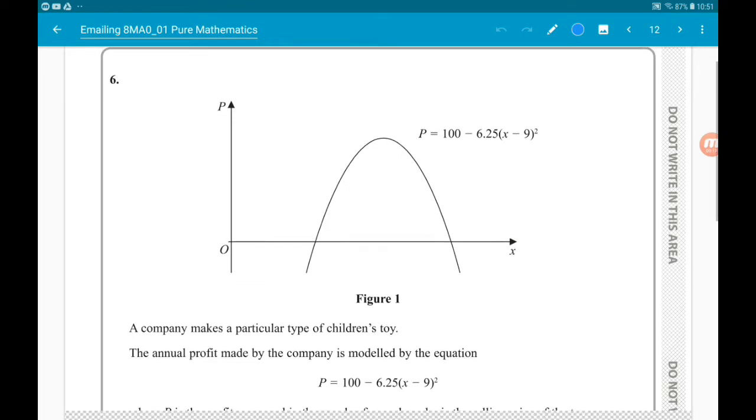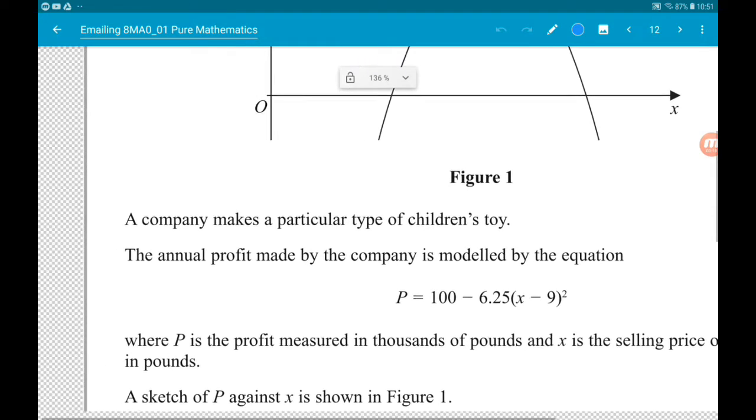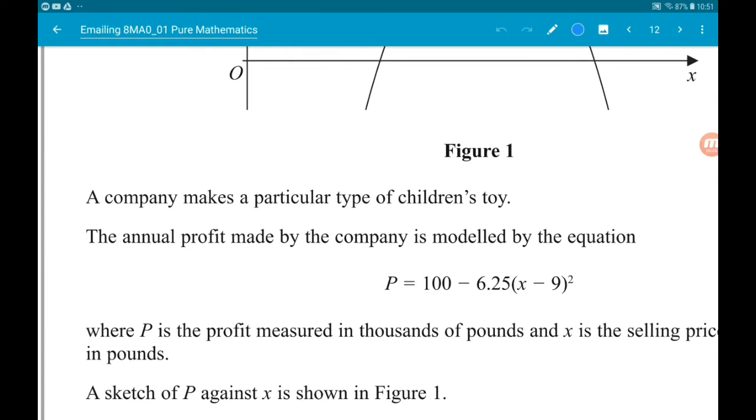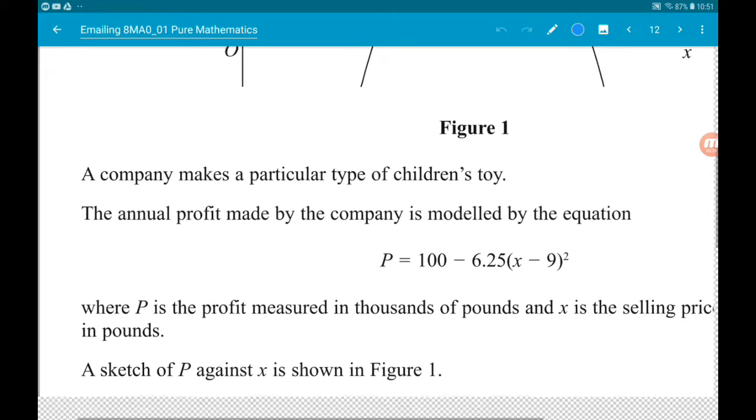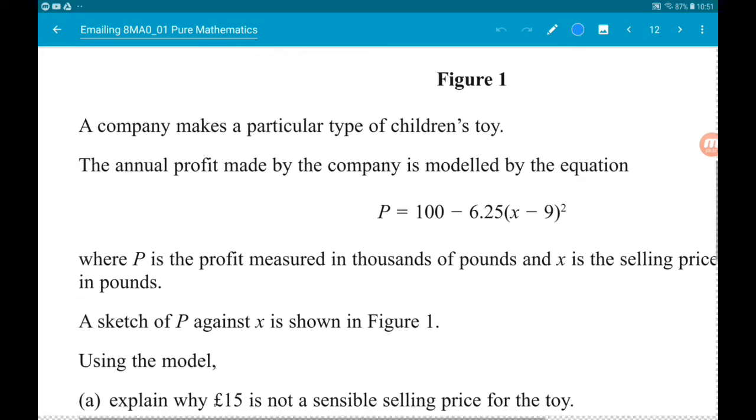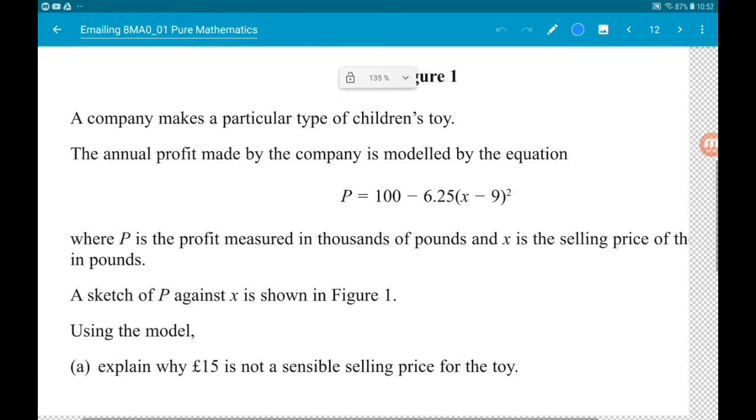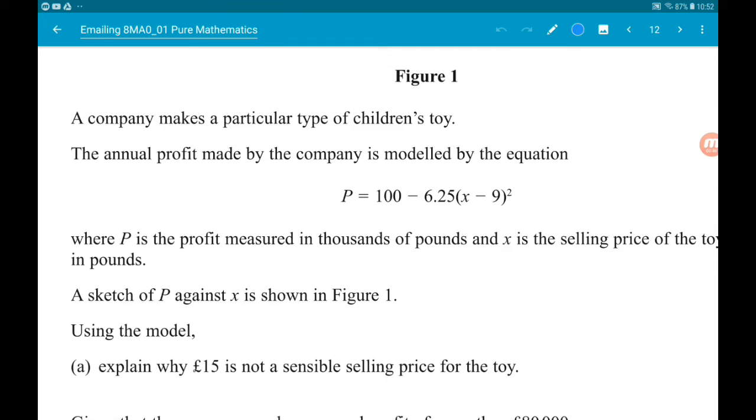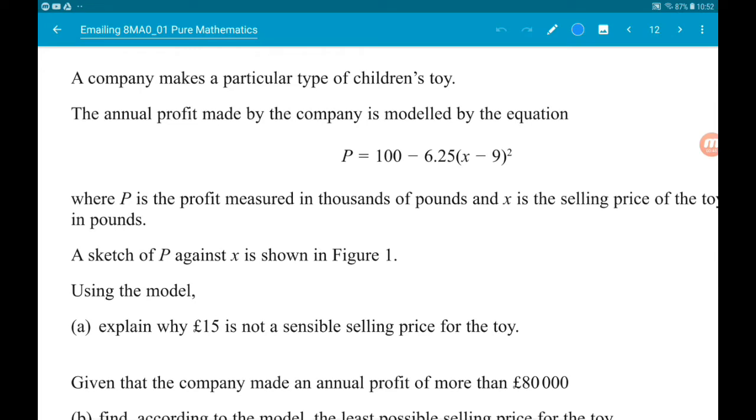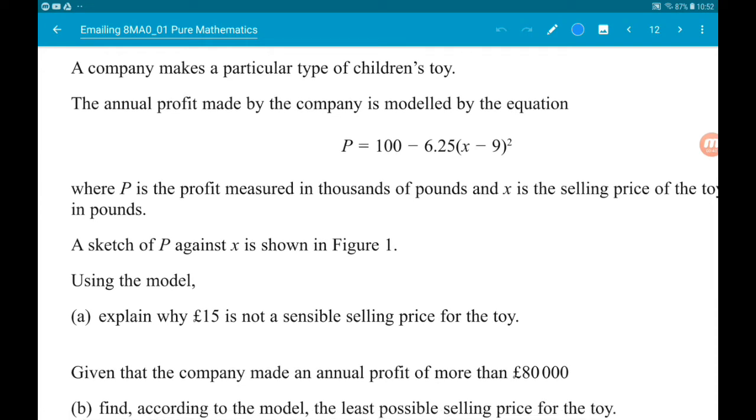Now we're told a company makes a particular type of children's toy. The annual profit made by the company is modeled by the equation of the graph, where p is the profit in thousands of pounds and x is the selling price of the toy in pounds. A sketch of p against x is shown above.